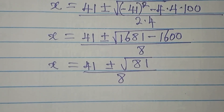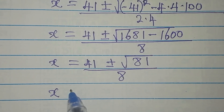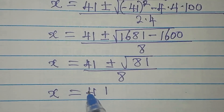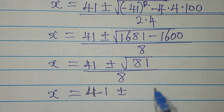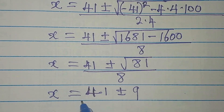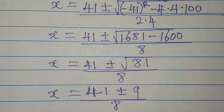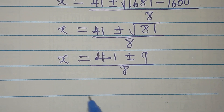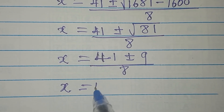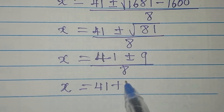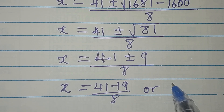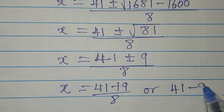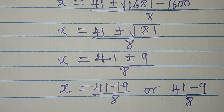From here, the square root of 81 is 9, so x equals 41 plus or minus 9, divided by 8. This gives us two solutions: x equals 41 plus 9 over 8, or x equals 41 minus 9 over 8.